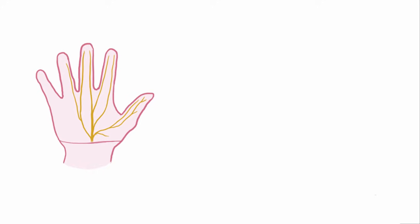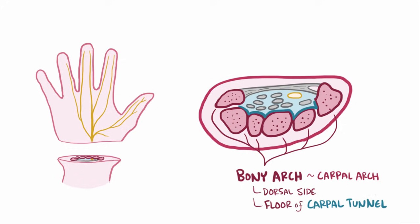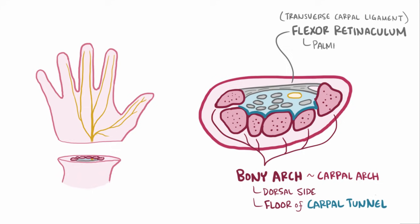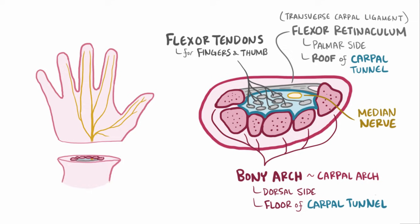Taking a cross section of the wrist, we'll see a bony arch known as the carpal arch on the dorsal side of the hand, which forms the floor of the carpal tunnel, and a sheath of connective tissue called the flexor retinaculum, or transverse carpal ligament, which is on the palmar side of the hand and forms the roof of the carpal tunnel. Also there are nine flexor tendons which go to the fingers and the thumb, as well as one nerve, the median nerve, which travels down the forearm and goes through the carpal tunnel.